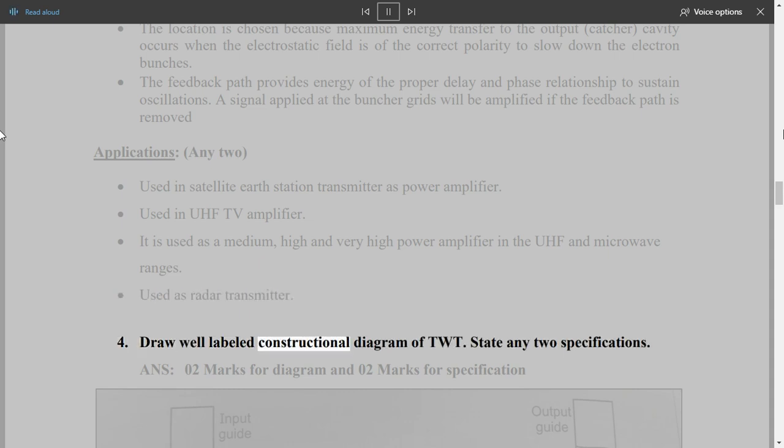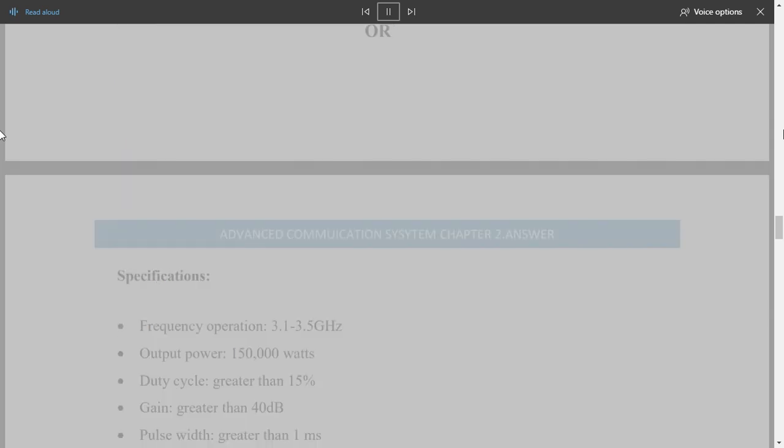4. Draw Well-Labeled Constructional Diagram of TWT. State any two specifications. 0-2 marks for diagram and 0-2 marks for specification. Specifications: Frequency operation 3.1 to 3.5 GHz. Output Power 150,000 W. Duty Cycle Greater than 15%. Gain Greater than 40 dB. Pulse Width Greater than 1 ms. Modulation Non-Intercepting.